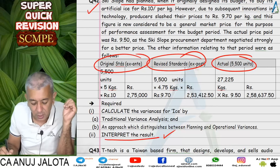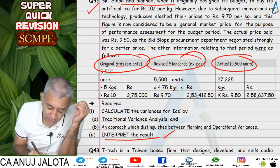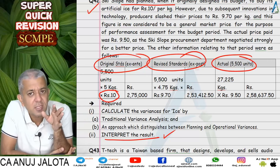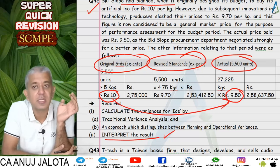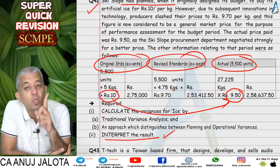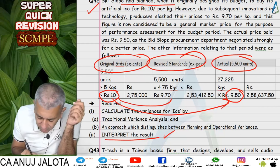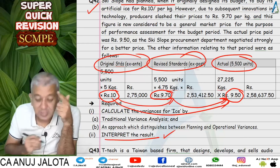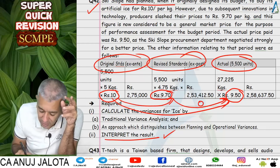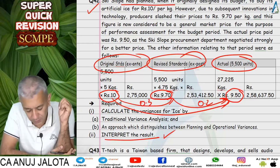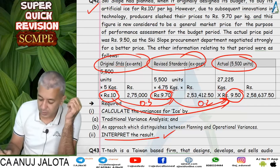Regarding the comments in question 42: originally we thought we would purchase ice at a rate of 10, but we actually purchased it at 9.5. We might think we saved 0.5, but the price of ice dropped in any case — the new standard was 9.7. So the manager should only be credited for saving 0.2, not the full 0.5. The 0.3 difference was an uncontrollable, planning-related saving. Please go through the comments carefully.